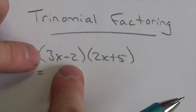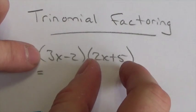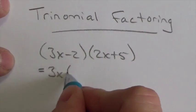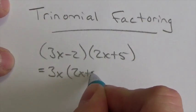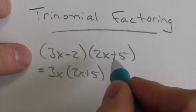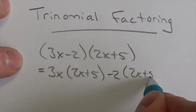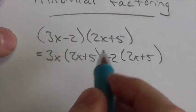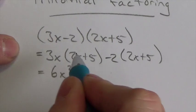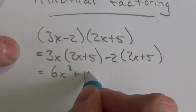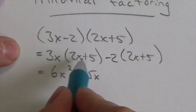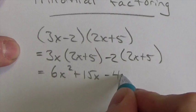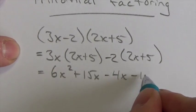We take both terms from this first binomial and they get distributed to both terms in the second binomial here. It's just a distribution. So 3x will get multiplied by 2x plus 5 and then the negative 2 will also get multiplied by 2x plus 5. 3x gets distributed to those terms and we get 6x squared plus 15x when I distribute the 3x to those two. Negative 2 then gets distributed to these two terms. So we get negative 4x and then minus 10.